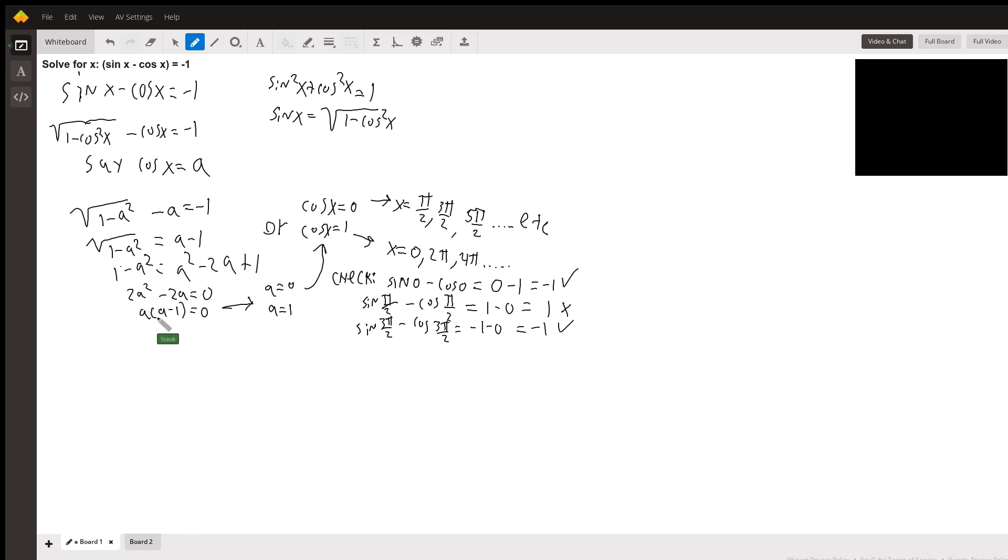Factor and divide by two: get a times a minus one equals zero, so that means a is zero or one. Since we have cosine squared equals a, that means cosine of x is zero or cosine of x is one.